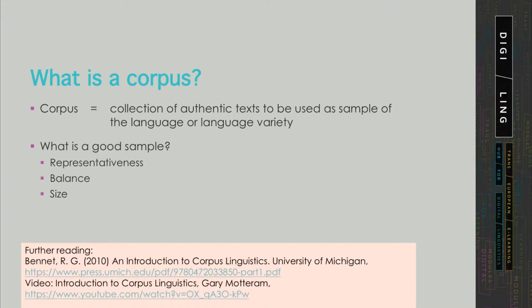A good sample in the context of corpora is supposed to be representative, balanced, and big enough. We'll get back to these notions in a second, but if you're new to corpora, I warmly recommend some further reading. There is a gentle introduction — you have a link here — which explains some basic terms in corpus linguistics.